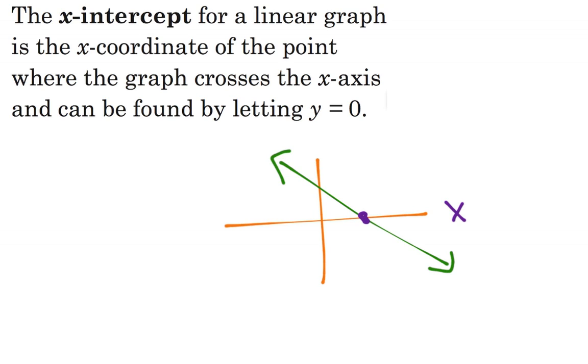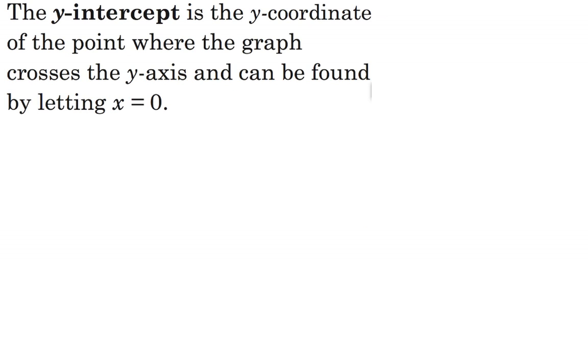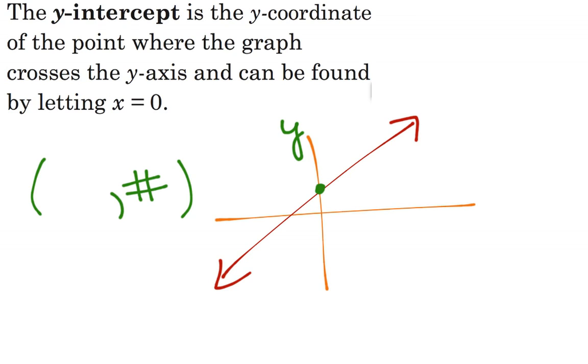And similarly, if we have a graph like this, the y-intercept is here where our graph crosses the y-axis. So these points both exist when one of the values of the coordinates is zero. On our y-intercept, we have a number for y but our x value is zero.